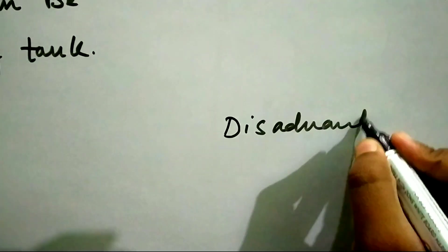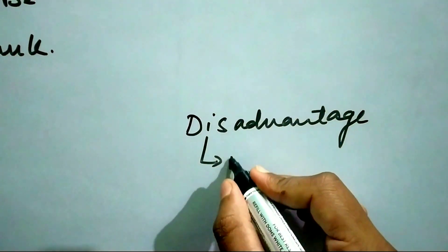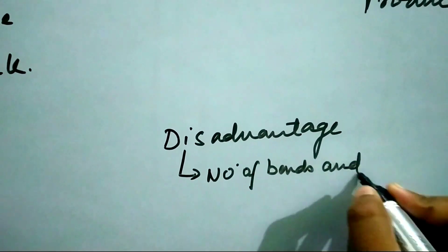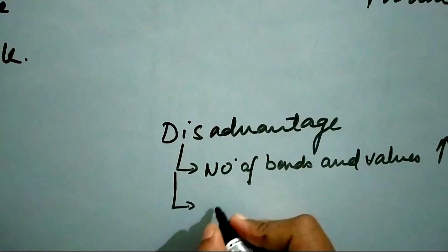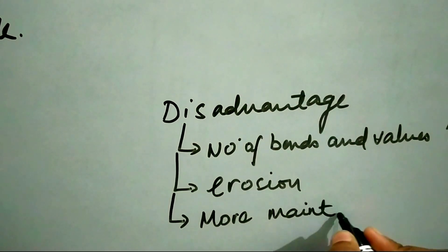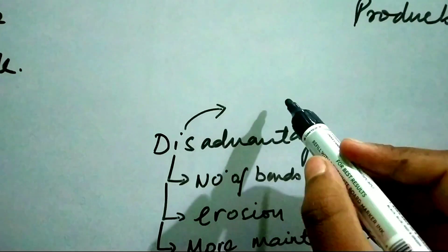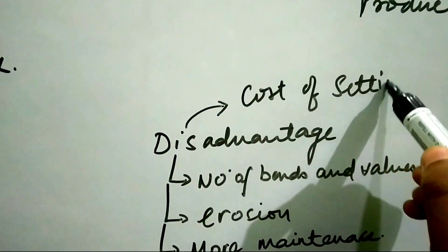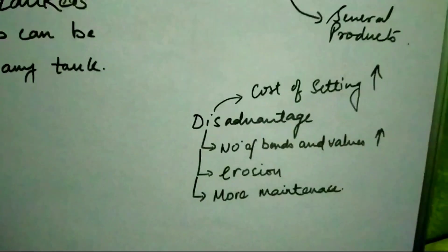But the disadvantage of this type of system is that leaks due to erosion become common, which leads to higher maintenance, and also the initial cost of fitting this type of system is very high. So this much is important with this topic and I hope you liked it.